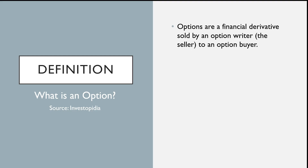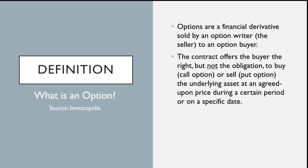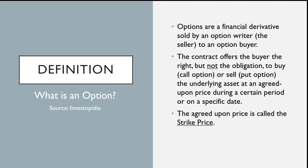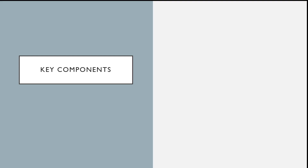Let's look at the definition of what an option is. Using Investopedia: options are financial derivatives offered by an option writer — the seller — to an option buyer. The contract gives the buyer the right but not the obligation to buy (a call option) or sell (a put option) the underlying asset at an agreed-upon price during a certain period or on a specific date. The underlying asset can be stocks, ETFs, futures, or a house. The agreed-upon price is called the strike price, which is different from the option price.